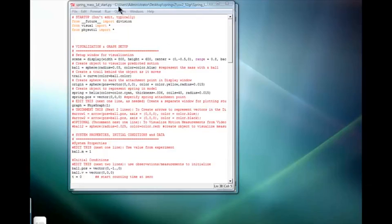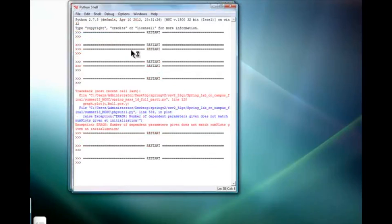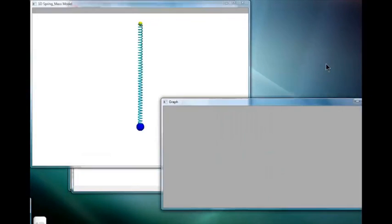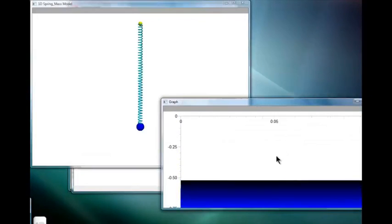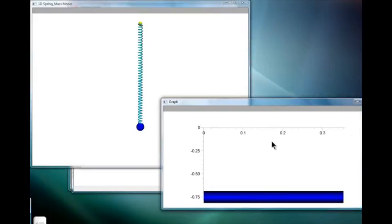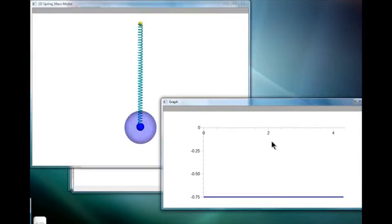We're now in a position to construct our computer model of the motion. Here's a Python program that you can use as a starting point. The link for this program should pop up now. If you run the program you should see something like this if your program is running properly. In the display window you should see a helix that represents the spring and a blue sphere to represent the mass. The yellow sphere at the top indicates the attachment point of the spring which we choose here as the origin consistent with our coordinate system choice in our video analysis.